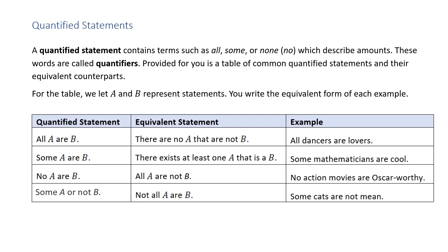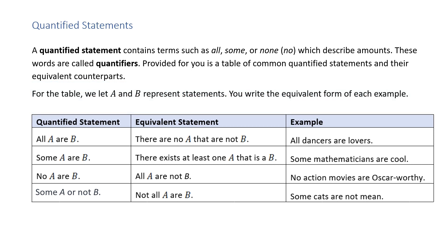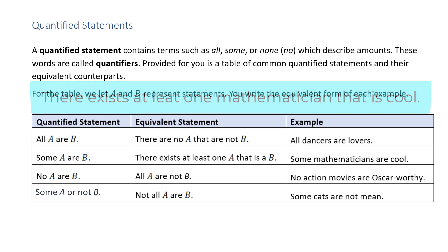Quantified statements. A quantified statement contains terms such as all, some, or none, which describe amounts — these words are called quantifiers. Provided is a table of common quantified statements and their equivalent counterparts, where A and B represent statements. First, 'all A are B' — example: 'all dancers are lovers' — equivalent form: 'there are no A that are not B,' i.e., 'there are no dancers that are not lovers.' Second, 'some A are B' — example: 'some mathematicians are cool' — equivalent form: 'there exists at least one A that is B,' i.e., 'there exists at least one mathematician that is cool.'